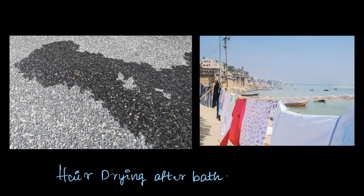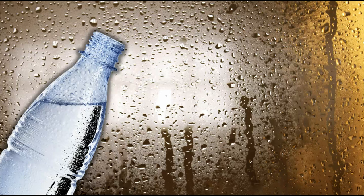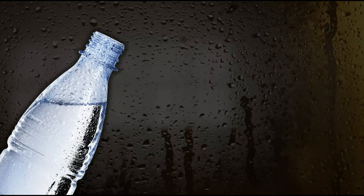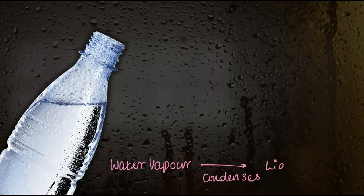Now we can answer the question we started with. Since water molecules can escape from liquid at any temperature, water vapor can indeed be present in the air without needing to reach 100°C. And when these water molecules hit a cold surface — like the surface of a bottle or a window — water vapor condenses to form liquid water, as you can see here. This is clear evidence of the existence of water in the air in the form of water vapor.